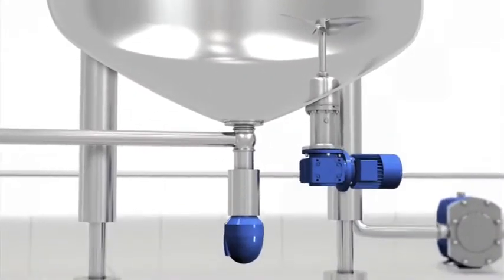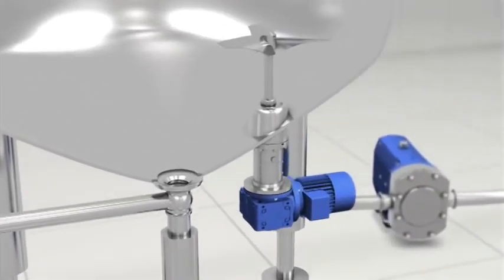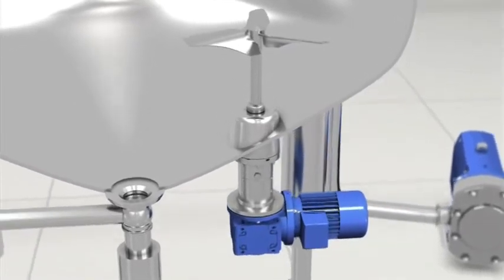Bottom mounted agitator type ALB. Service of the agitator can be carried out from ground level, which will make the inspection fast and easy.